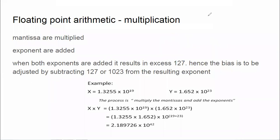Since the bias is to be adjusted by subtracting 127 or 1023 from the resulting exponent, that is the meaning of excess-127. In this example there is no excess of 127 because when you add 19 and the other exponent, it is already considered to be in normalized form. Any exponent which is less than 127 will be considered as already normalized.